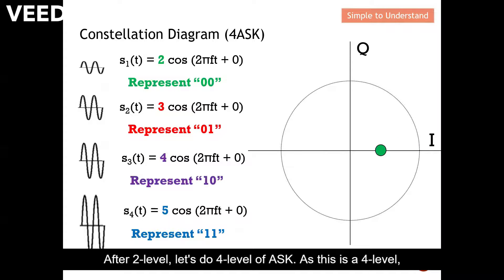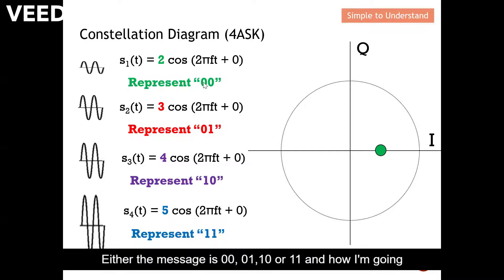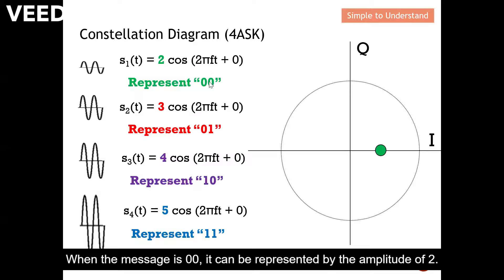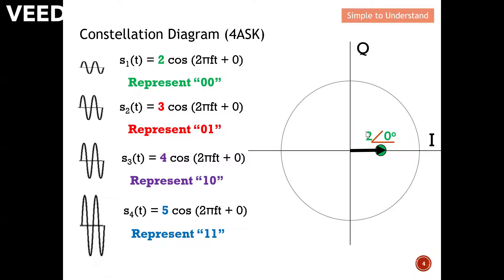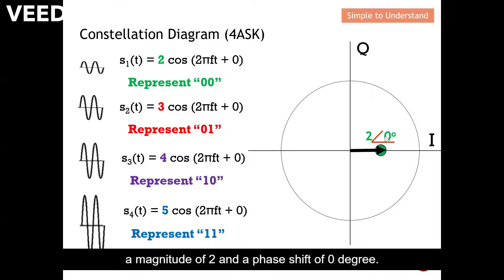After 2-level, let's do 4-level ASK. Since this is a 4-level system, there are 4 possible outcomes: the message is 00, 01, 10, or 11. When the message is 00, it can be represented by an amplitude of 2 — a magnitude of 2 with a phase shift of 0 degrees.